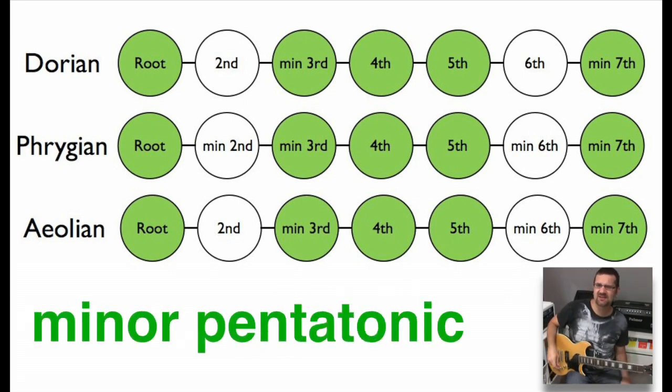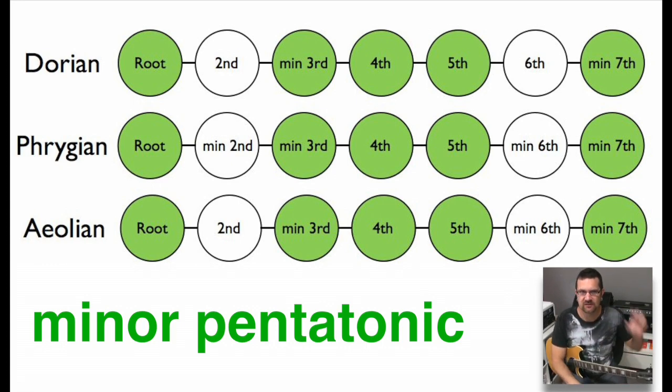The minor pentatonic scale is a series of five notes found in the Dorian, Phrygian, and Aeolian. So if I'm playing over a Phrygian backing track, I could play a minor pentatonic scale. If I want to really play modal and master the Dorian, Phrygian, and Aeolian languages, all I need to do is learn two additional notes — the characteristic notes of these three different backing tracks, countries, languages, alphabets.